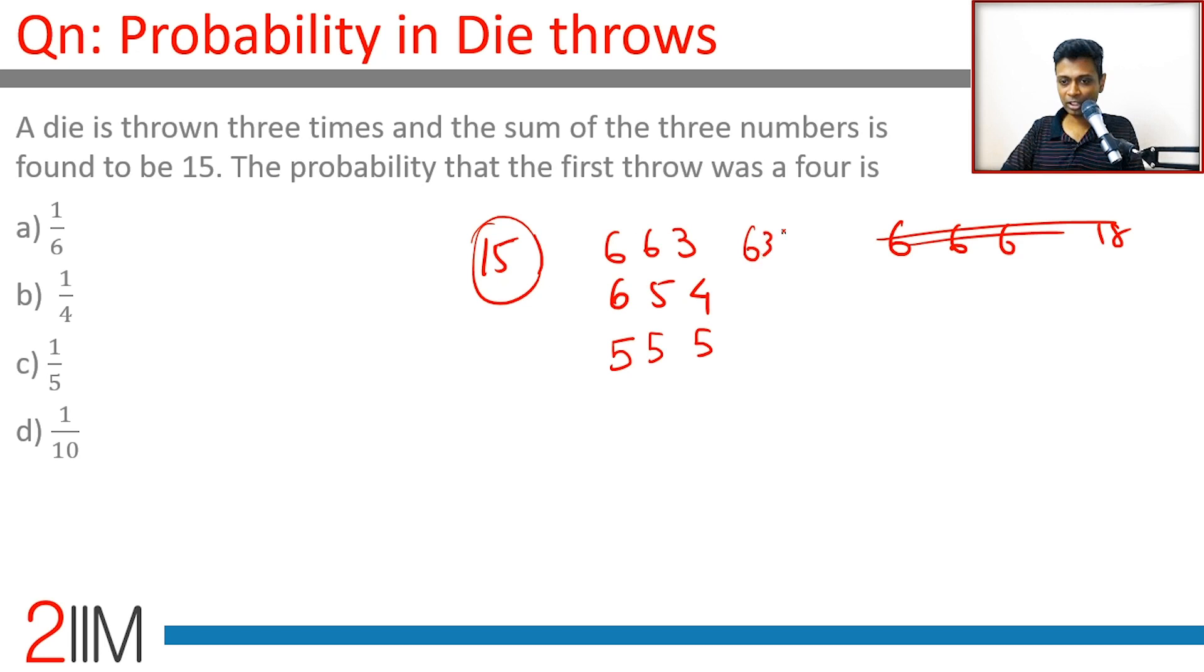Now 6, 6, 3 can be 6, 3, 6 or 3, 6, 6, so three possibilities here. For 6, 5, 4, there are six possibilities. For 5, 5, 5, there's one possibility. So totally there are 10 possible outcomes where it could turn out to be 15.